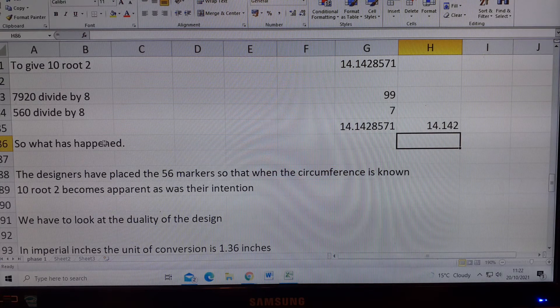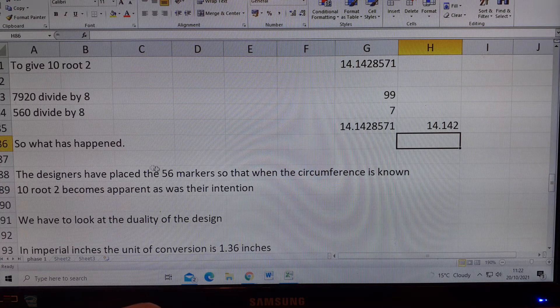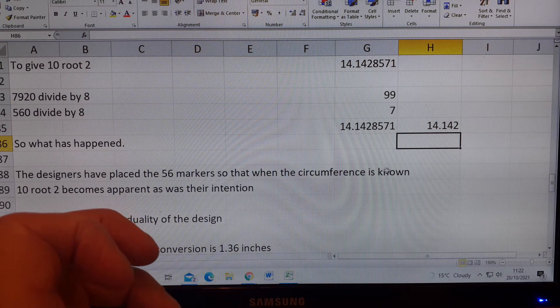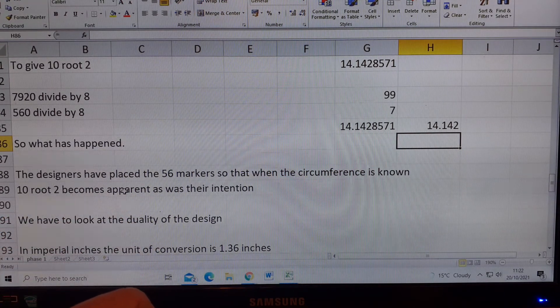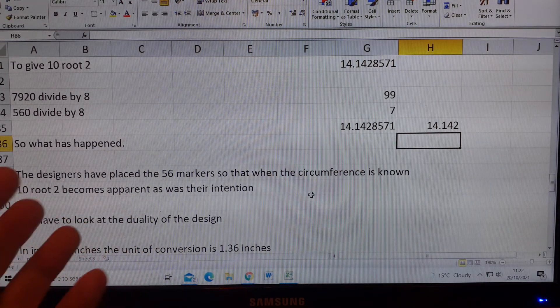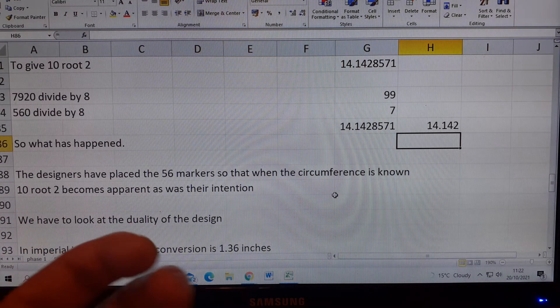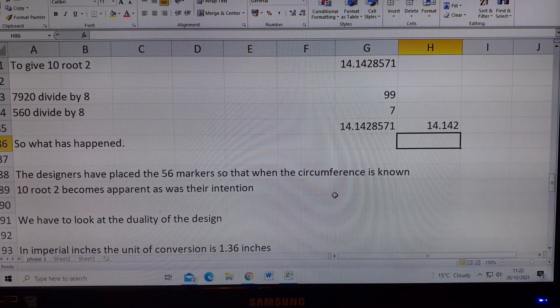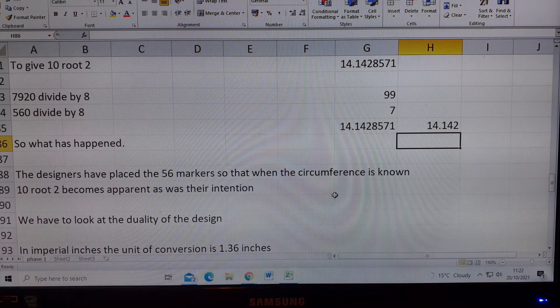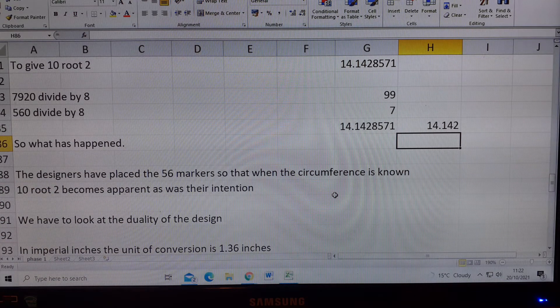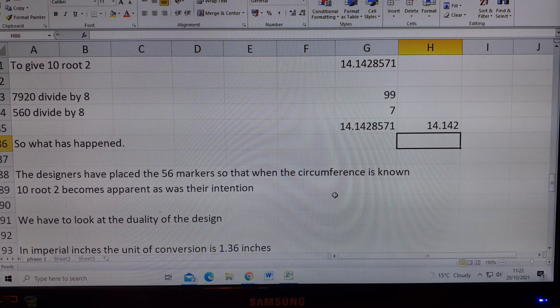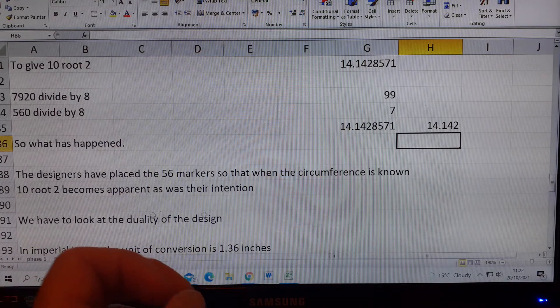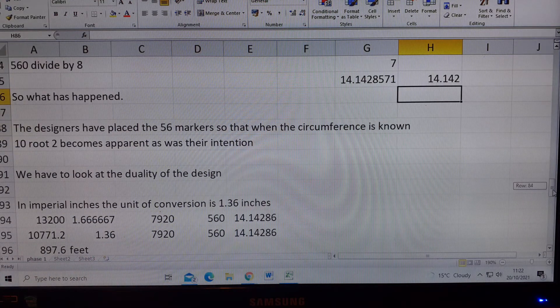So what has happened? The designers have placed the 56 markers so that when the circumference is known, 10 root 2 becomes apparent, as was their intention. Now, Tom's given us the measure, he didn't know about this. He had no idea. He's just worked out 330 megalithic yards. We have to look at the duality of the design, because there's more than one unit of measure being used in this design.